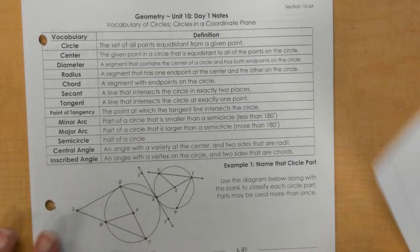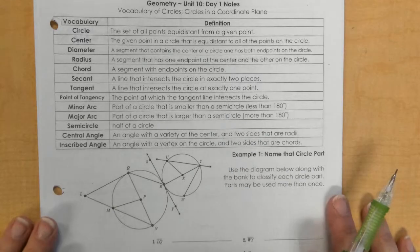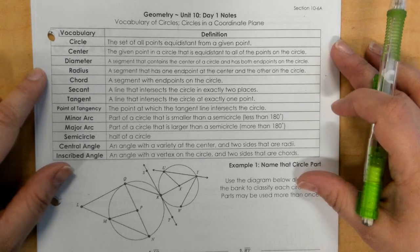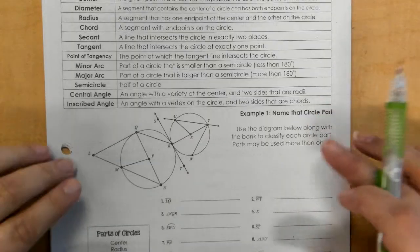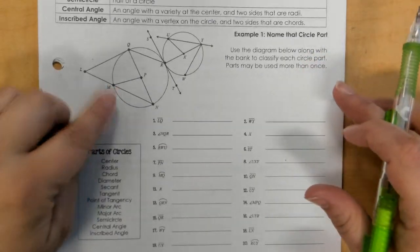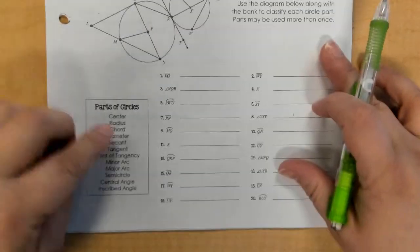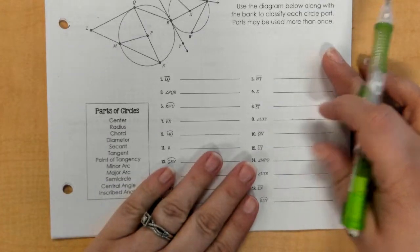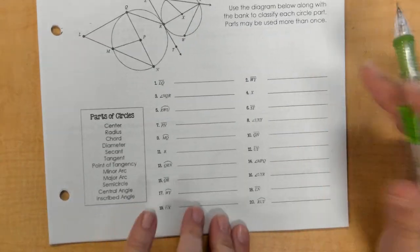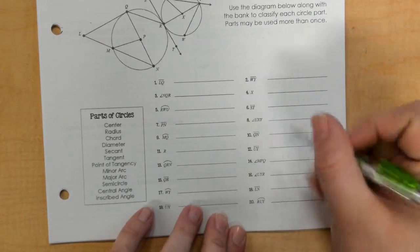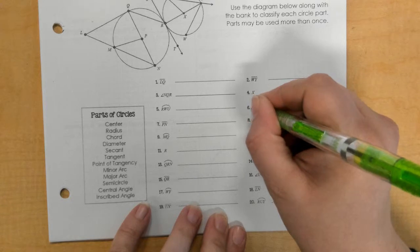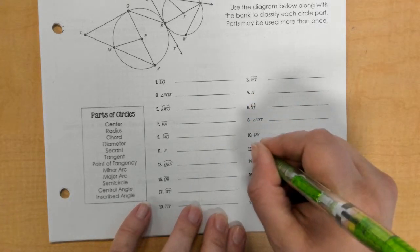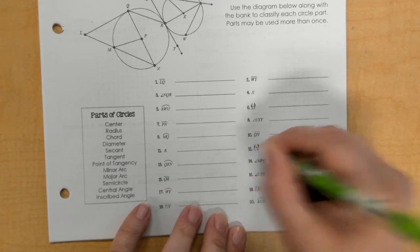All right, so moving on to actually the vocabulary part of this. So up here I gave you all the definitions of the vocabulary parts of a circle, and then down here given this particular picture, these different parts like a word bank, you have to fill this in. Okay, so before we start, number 6 and number 12 should have little arrows on it like a line, so we will say line ST and line EY.